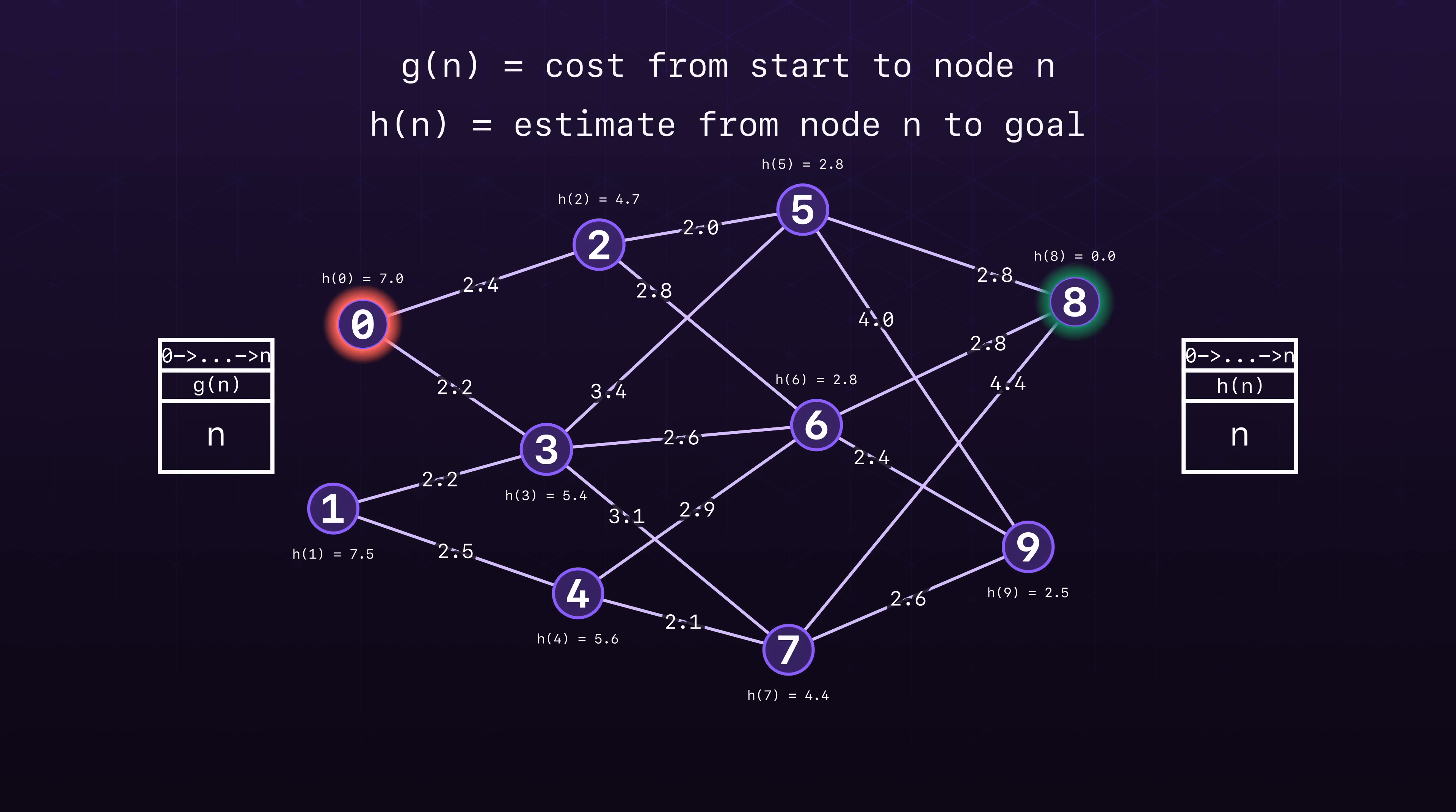Specifically, let's now change the algorithm to calculate the cost associated with the node as the sum of the actual cost to arrive plus the Euclidean distance estimate to the goal. Let's run through it and observe the outcome.